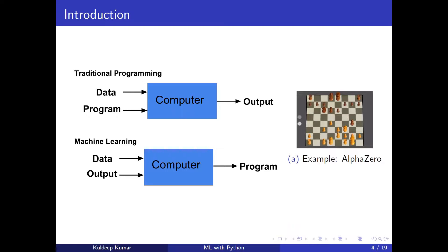That's where machine learning comes in. The goal shifts from relying on heuristics to relying more on data. You feed the data as well as a set of labels or outputs to the computer, and what it tries to give you is a program — it learns from the data what the output should be.